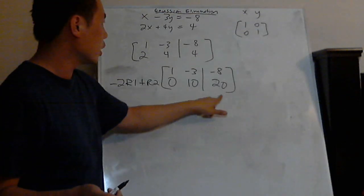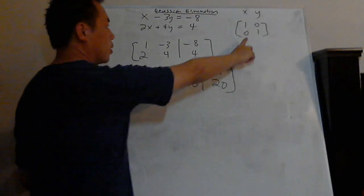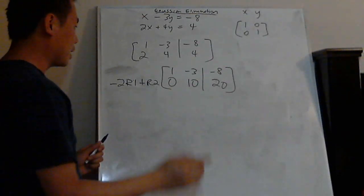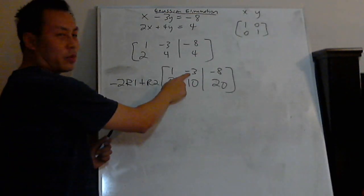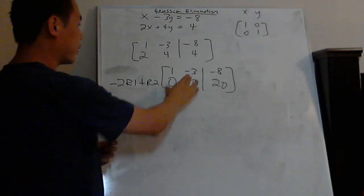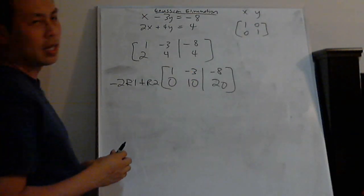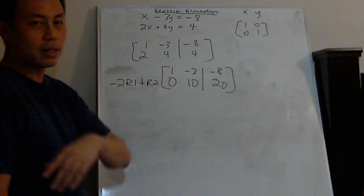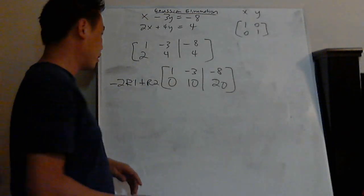And then now you've got to do it on every single number now. So negative two times negative three is six. Six plus four is ten. Now you've got to do it again. Negative two times negative eight is sixteen. Sixteen plus four is twenty. Do you see that? So I just changed this row only. And you can see I'm already halfway to it. Do you see that? I got one zero. So guess what my next step's going to be? I'm going to change this one to a zero now.